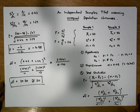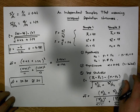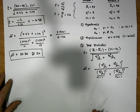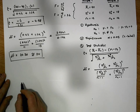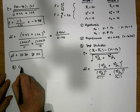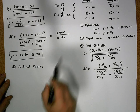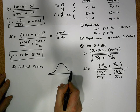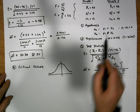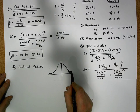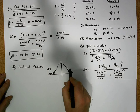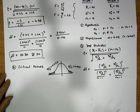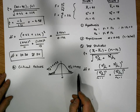Once we've calculated those, we proceed to step 4 to calculate the critical values for our test. We're using a t-test, so it's modeled by a t-distribution. It's a two-tailed test based on the alternative hypothesis, so we split the significance level and put half into the right tail and half into the left tail — that's alpha over 2, which is 0.025 in each tail.